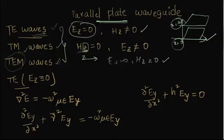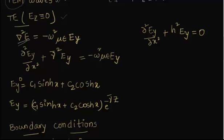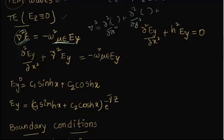Now let us consider TE relations. TE is where you have the transverse electric field zero. We take the equation del-squared E equal to minus omega-squared mu epsilon E_Y. The Laplacian operator del-squared can be written as d²/dx² plus d²/dy² plus d²/dz² of the field. Since d/dz can be written as minus gamma-bar, d²/dz² becomes gamma-bar squared.